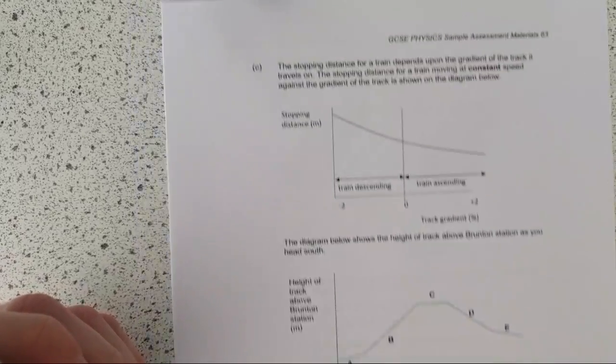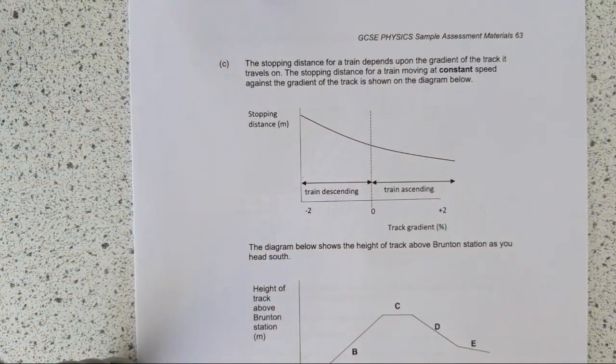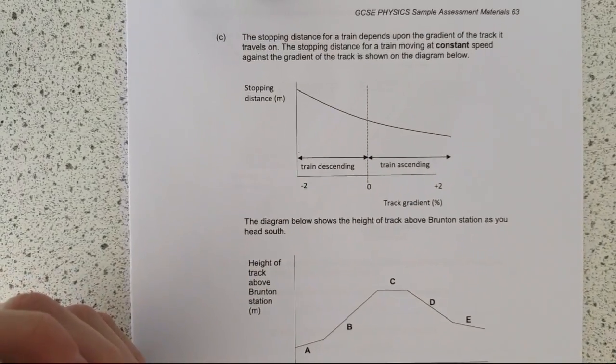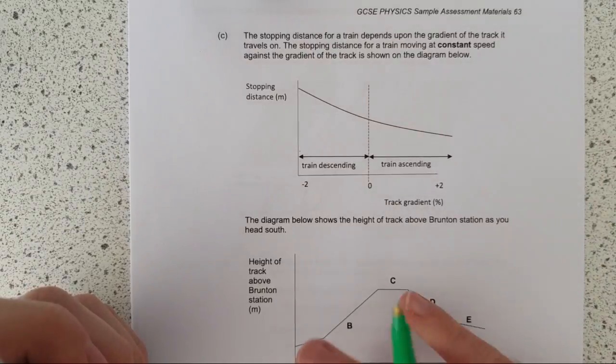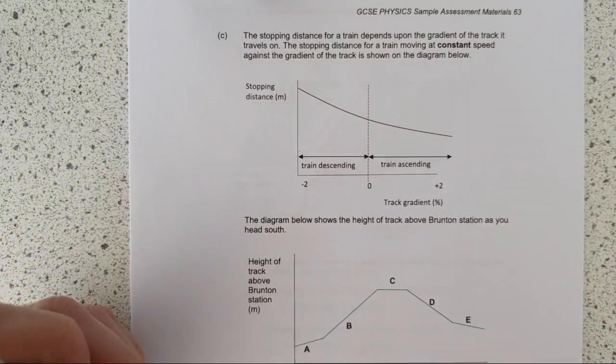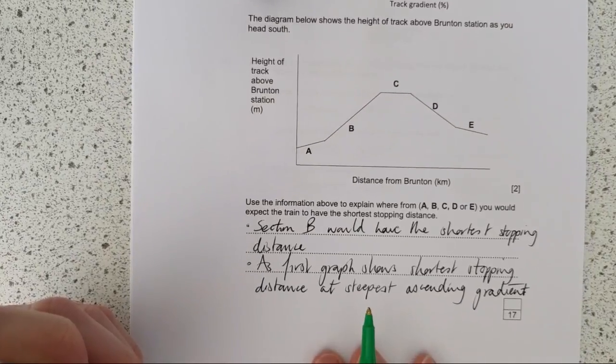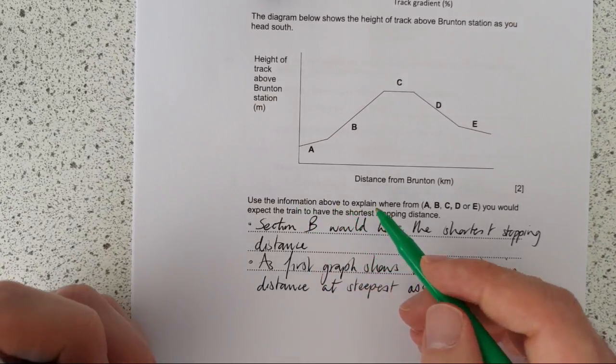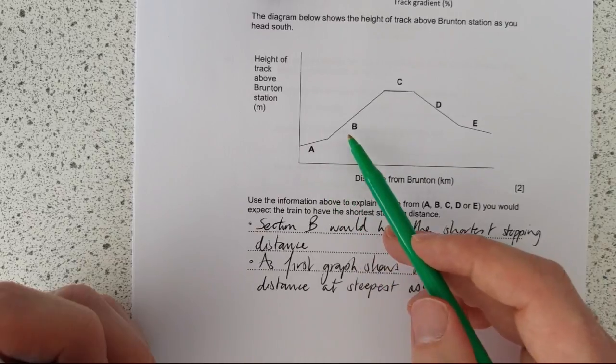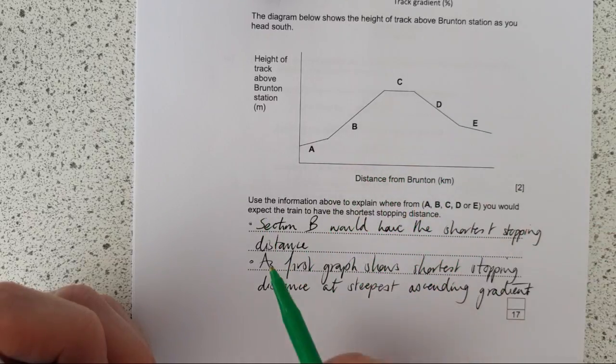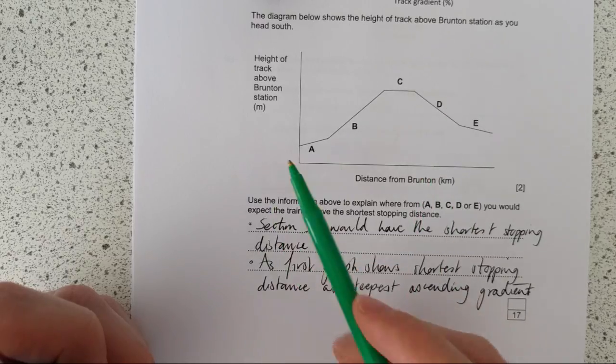Carrying on, this one cracks on about the trains something chronic, and there's two graphs on here, and you know, you have to really pause and get your head around it. But actually the question's pretty straightforward afterwards. Use the information above to explain where, from A, B, C, D, or E, you'd expect the train to have the shortest stopping distance. So essentially, let's try and understand the different sections. This shows you how the track height changes with the distance. So this is like a section through the hill, basically. So in other words, increasing height and lower height, so uphill and downhill.